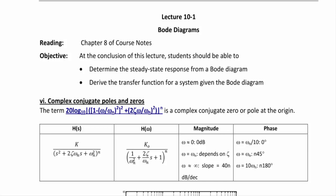In our last lecture, we looked at five terms used to create Bode diagrams, including static gain, poles at the origin, zeros at the origin, simple poles, and simple zeros. We also discussed what you do when you have a multiplicity greater than 1 for any of these terms.